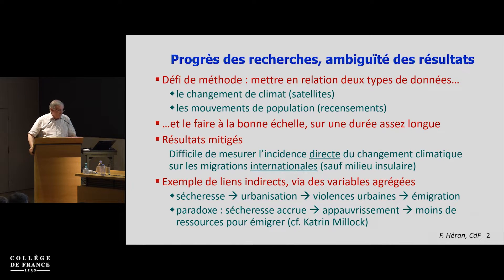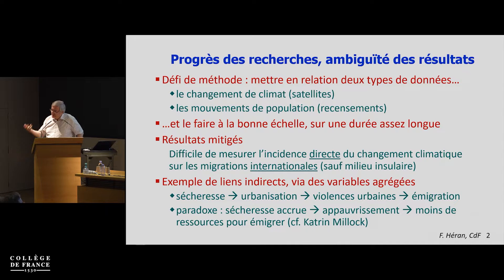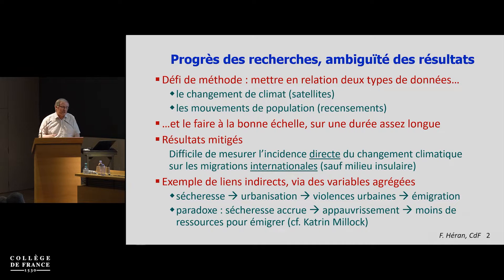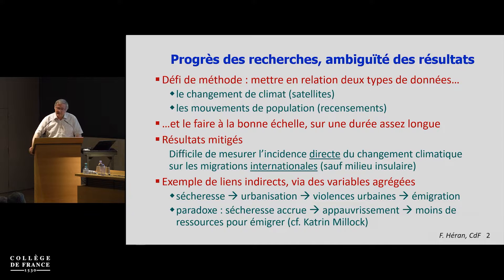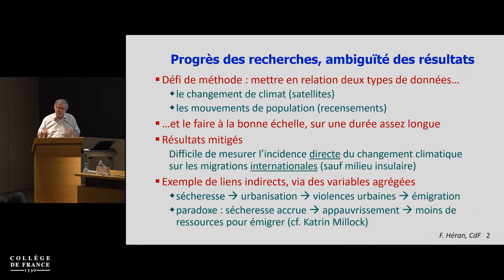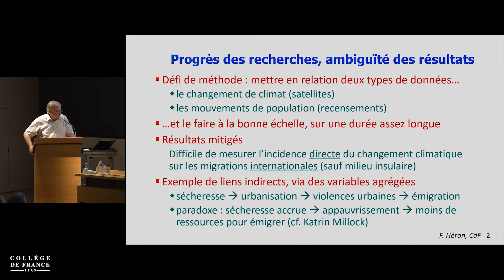Data on climate change — most of them, for example the studies made by economists, are based on satellite images which show over time the evolution of the use of the soil and the crops. And the second series of data are the population change, which come essentially from the censuses. The quality of the censuses is quite variable according to the regions of the world. And in order to establish a correlation between these two kinds of data, you need first a degree of granularity — a granularity which is rather thin.